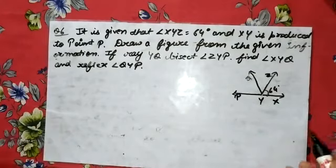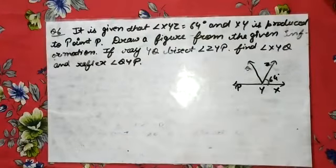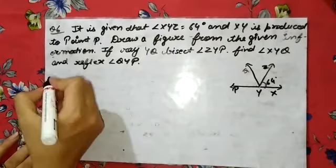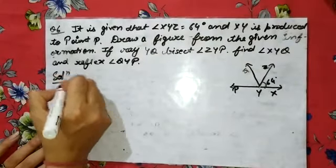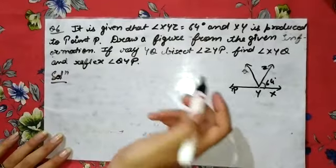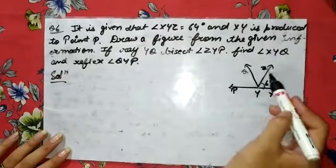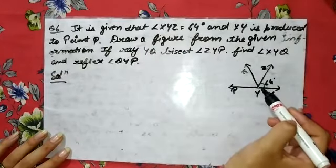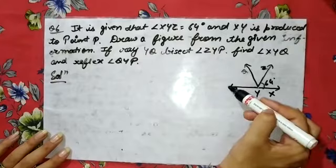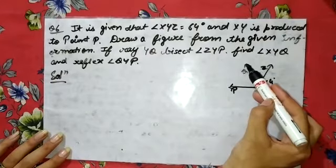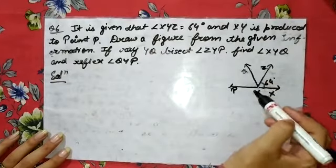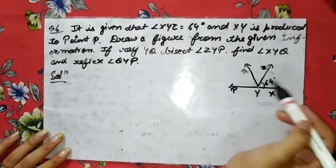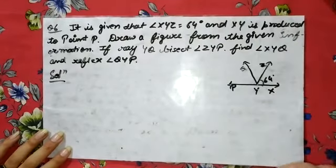The meaning of reflex I have already clarified in the introduction video. So now let us talk about the solution. I drew the figure from the information — I made a simple acute angle of 64° and extended XY to P. Then, as given, I drew line YQ bisecting angle ZYP.